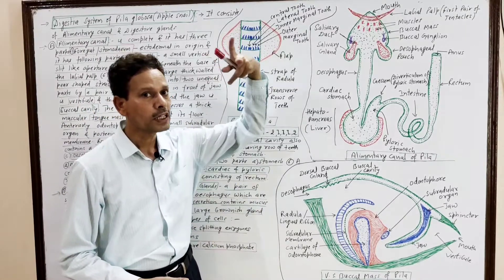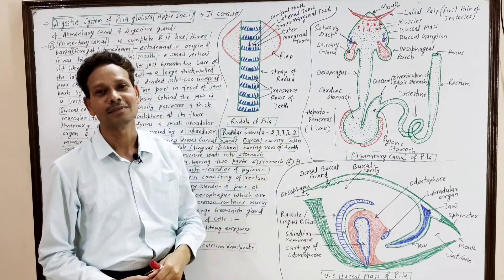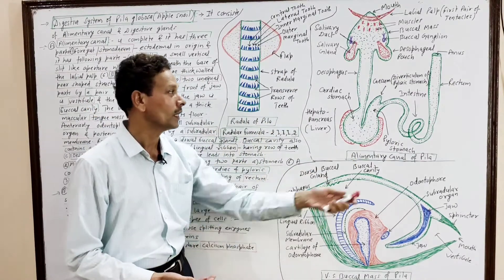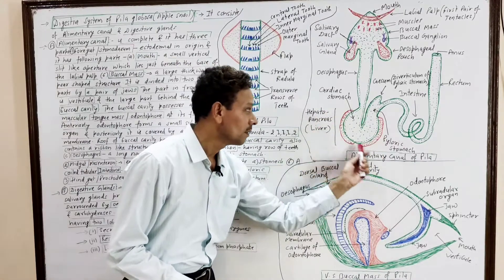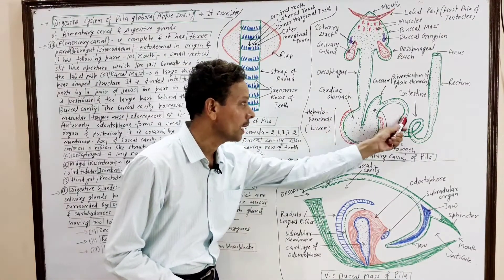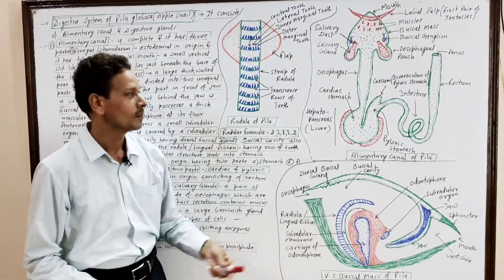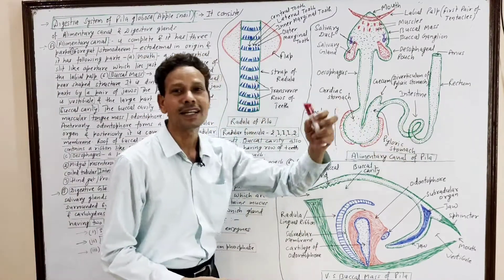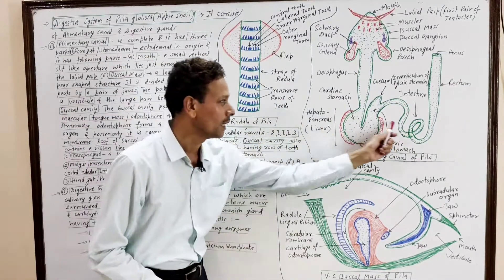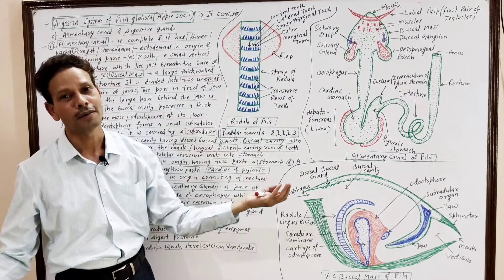Note down: the first part, foregut, and the last part, hindgut, are ectodermal in origin. While the midgut, mesenteron — which includes the stomach and the coiled tubular intestine — is endodermal in origin.